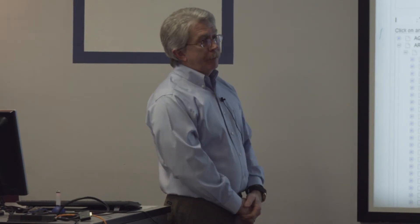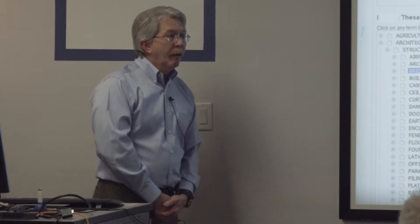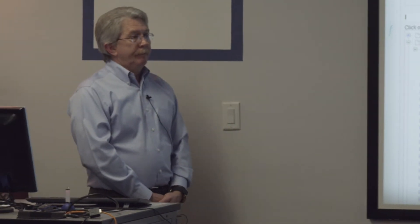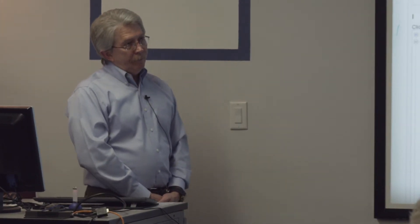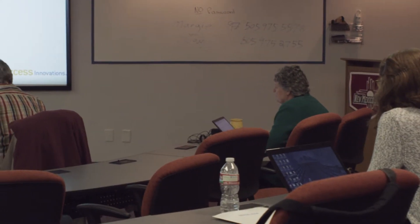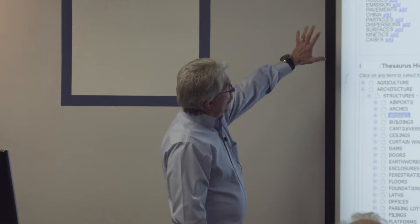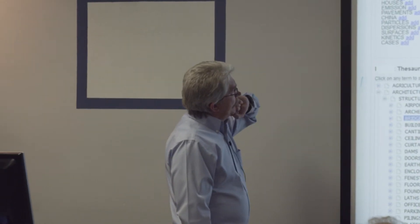Earlier we were talking about giving titles a weight of three, abstracts a weight of two, and full text a weight of one. Because of the iteration process here, it's a different way of doing the weighting in the indexing. And the author has this list to choose from.